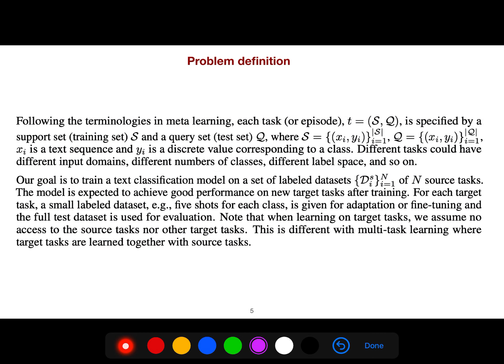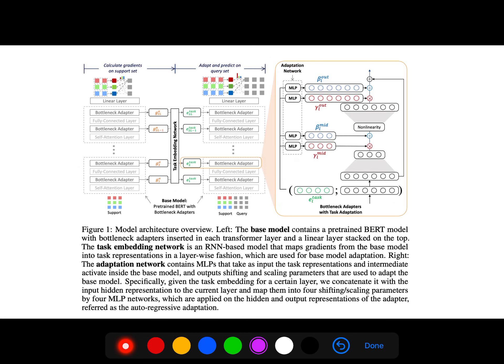Following the terminologies in meta-learning, each task has support and query sets as usual. We have text and its discrete value which corresponds to a class. For example, in NER name entity recognition, we have many different kinds of entities, different classes.